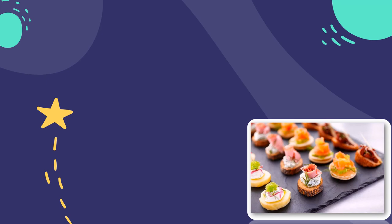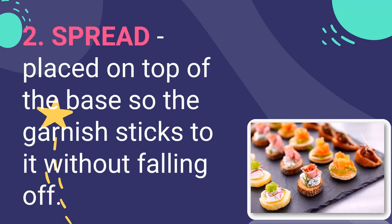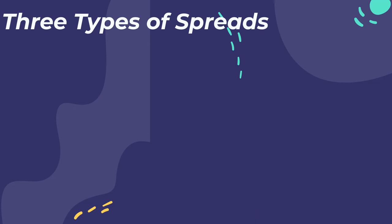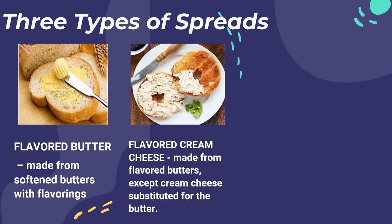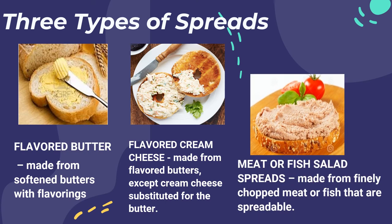The second part of canapés is the spread, placed on top of the base so the garnish sticks to it without falling off. Spreads are added to enhance the flavor or texture of the food. Three types of spreads are: flavored butter made from softened butter with flavorings; flavored cream cheese made similarly but substituting cream cheese for butter; and meat or fish salad spreads made from finely chopped meat or fish that are spreadable. Seasoning should be checked carefully to make the spread more stimulating to the appetite.